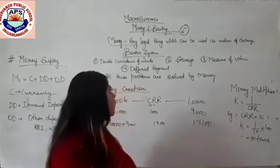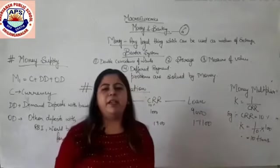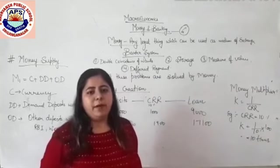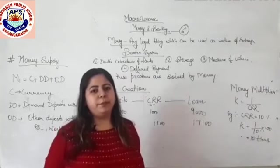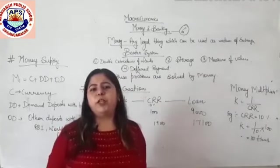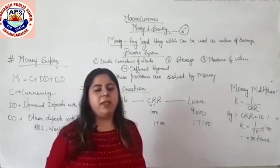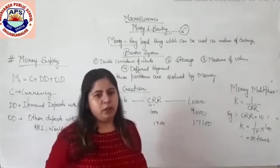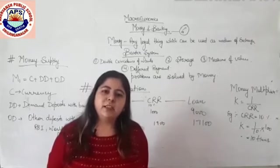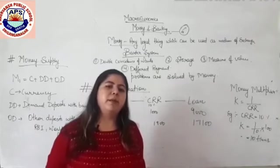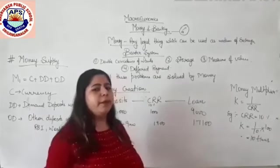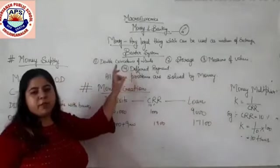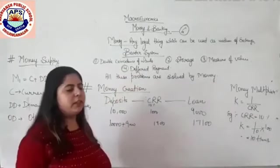The last problem is deferred payment — 'deferred' means future. In the barter system, future payment was not possible. If you had goods on the spot, only then could you trade; otherwise trade was not possible. But with money, you can take credit. So these are the 4 problems of the barter system that money has eliminated.